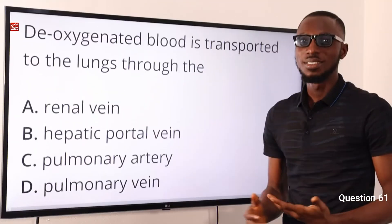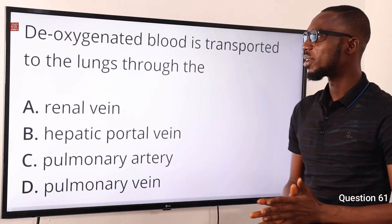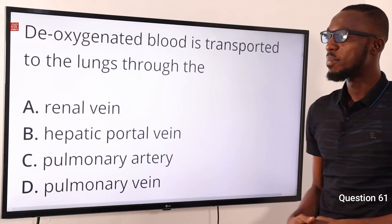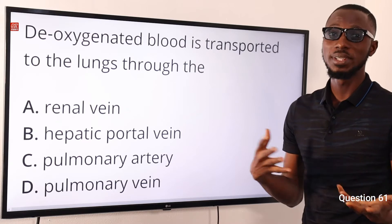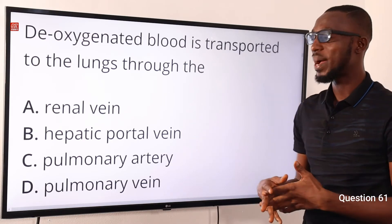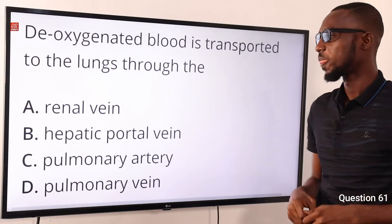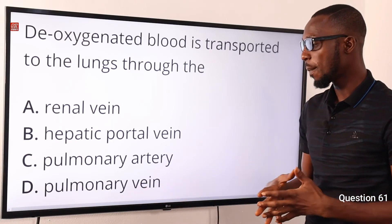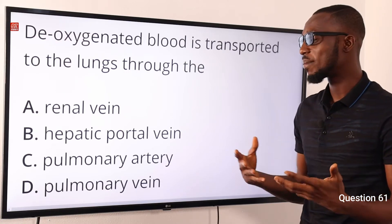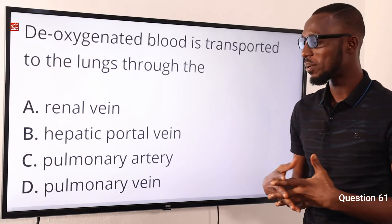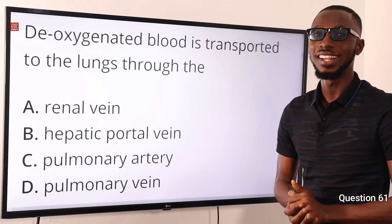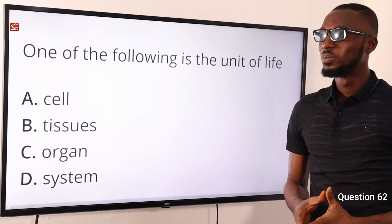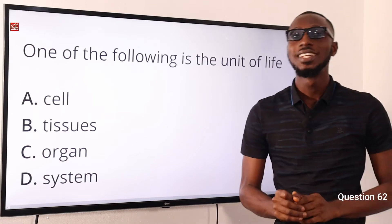Number 61: the oxygenated blood is transported to the lungs through what? This is through the pulmonary artery. The renal vein drains the kidney of oxygen-depleted blood. The hepatic portal vein and hepatic artery relate to the liver. The pulmonary vein carries oxygenated blood from the lungs into the left atrium. So the correct option is option C for the pulmonary artery.